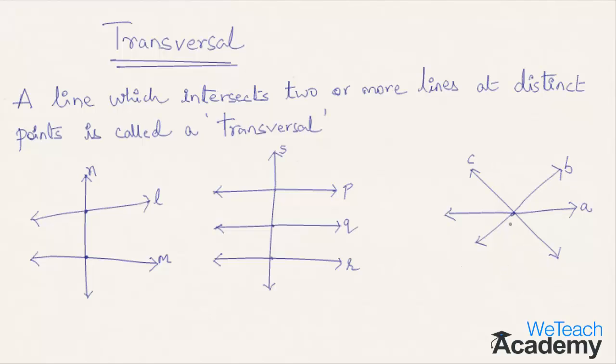Now let's go with the third diagram. Here we have two lines a and b intersected by the line c. The point of intersection of c is the same as that of a and b.